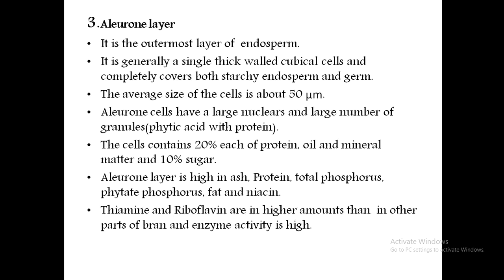The aleuron layer is the outermost layer of the endosperm. When a wheat kernel is dehulled, the very first layer removed is the aleuron layer. It generally consists of single, thick-walled cubical cells and completely covers both the starchy endosperm and the germ. Its cells have a large nucleus and a large number of granules. The cells contain 20% protein and 10% sugar, and also contain oil, mineral matter, phosphorus, and are very rich in vitamin B complex — including niacin, thiamine (vitamin B1), and riboflavin (vitamin B2).